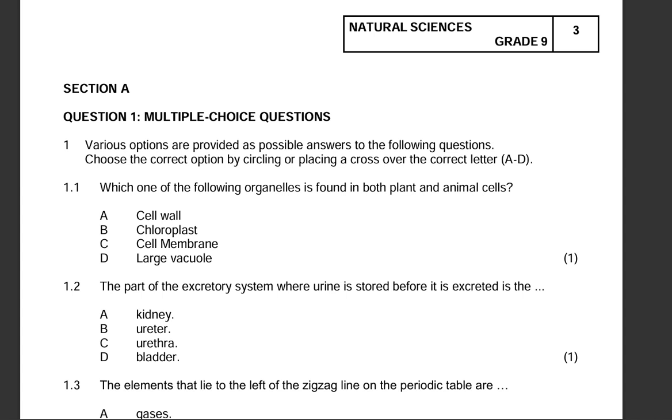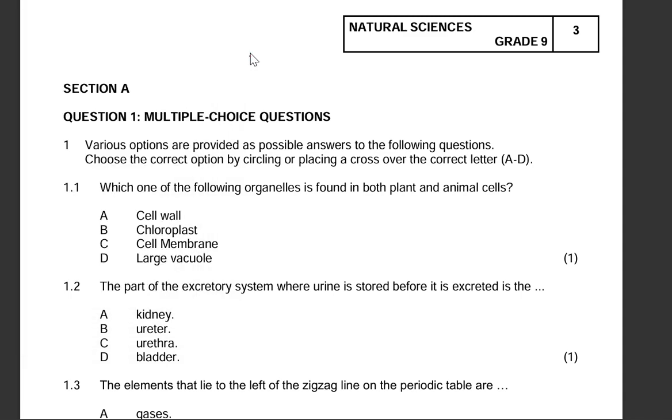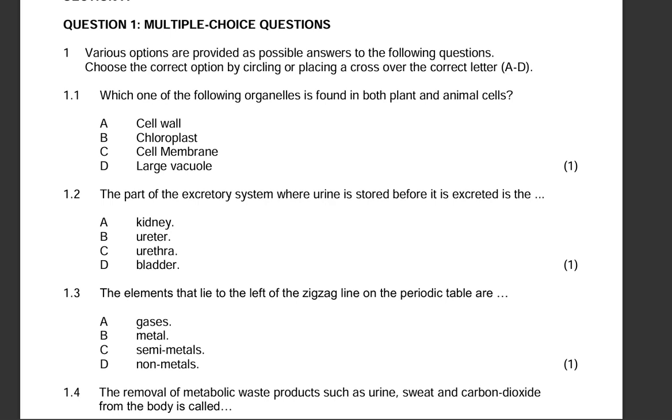We have our multiple choice questions. Obviously we know with multiple choice questions you are given about four options as possible answers, but you need to choose the correct option. Let me choose a nice color. You are given four possible answers or options. You need to choose the most correct one by circling the answer or placing a cross over the correct label.